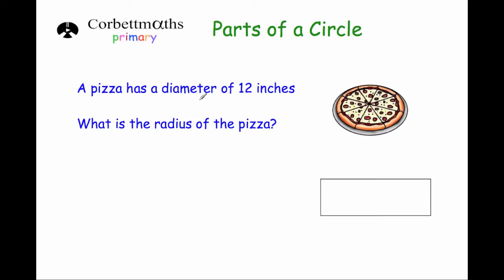So if we know what the diameter is, to find the radius, we just need to divide by 2. Because obviously, we want to find halfway across the circle. So 12 divided by 2, 12 divided by 2 is 6. So the answer would be 6 inches.